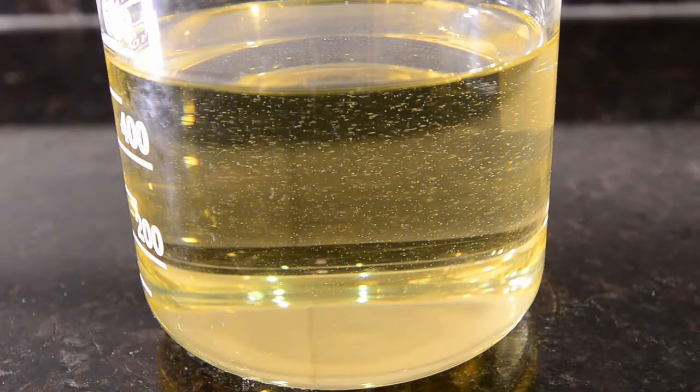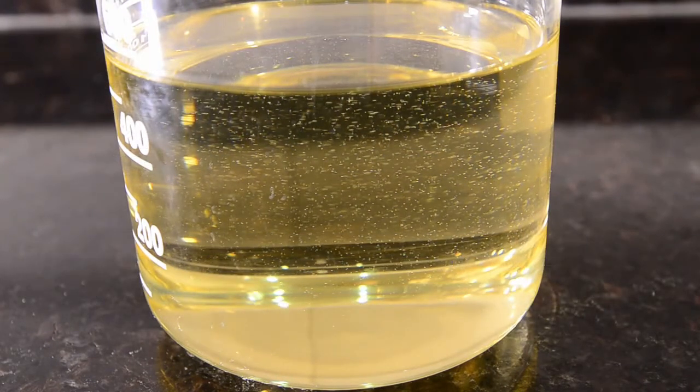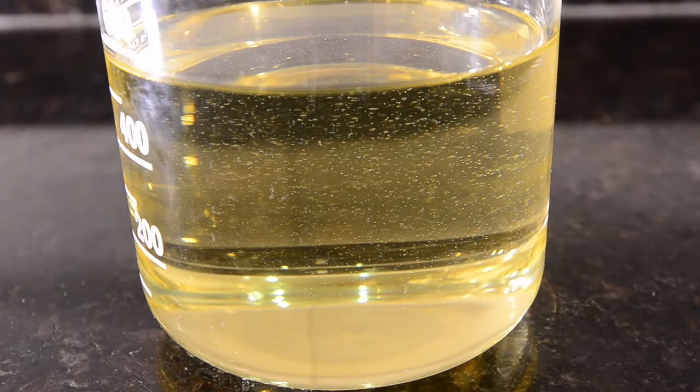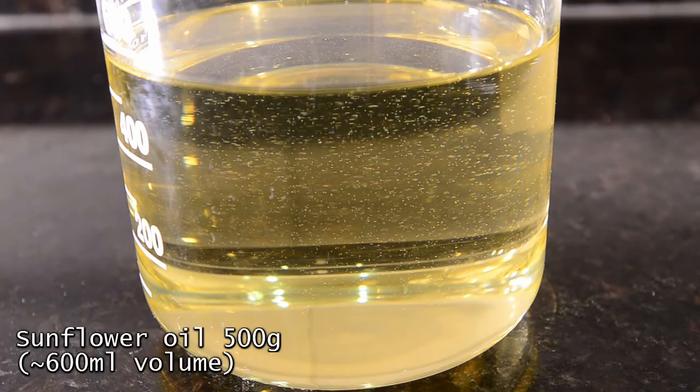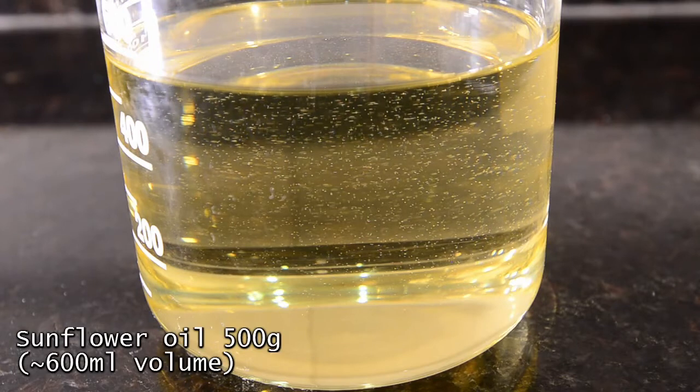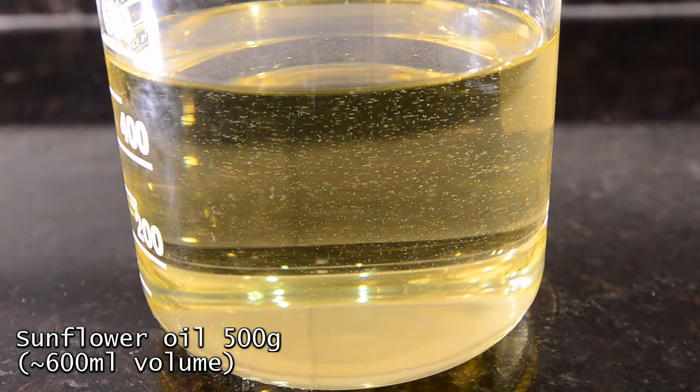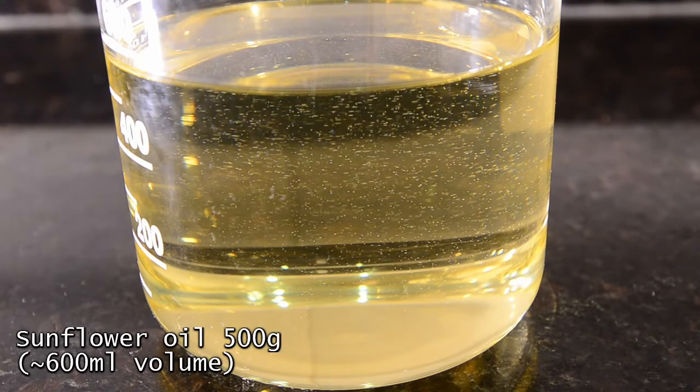Palm oil is the best, but rapeseed, canola and sunflower oil also work well. We're starting with 500 grams of sunflower oil which is around 600 ml in volume. We've poured this into a large 1 liter beaker.